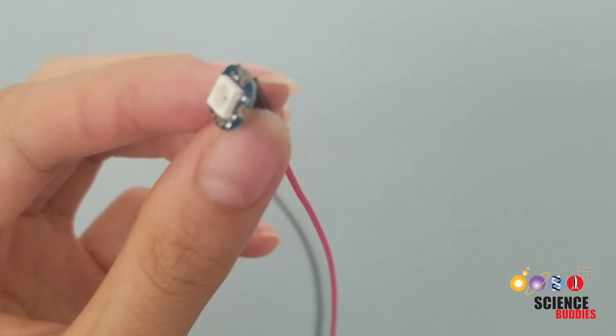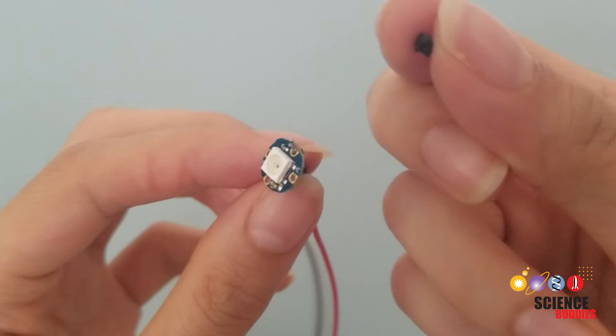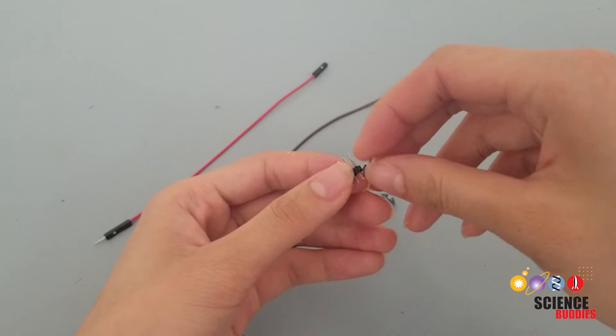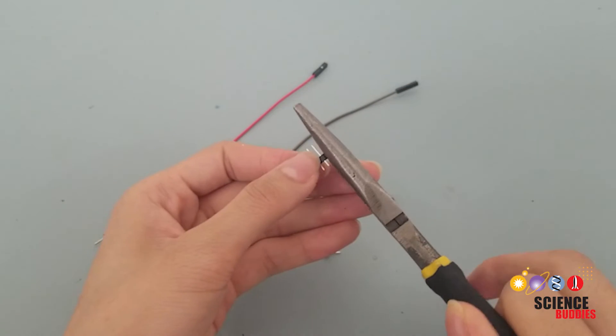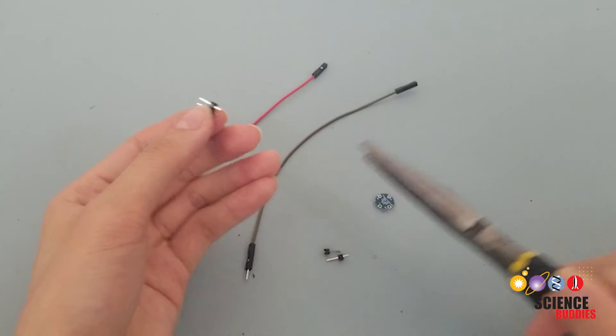you will use regular jumper wires for two of the connections because that makes it easier to avoid short circuits in the narrow tip of the unicorn horn. Alternatively, you could use conductive thread for all of the connections if you cover the thread in an insulating material, like tape or fabric paint.